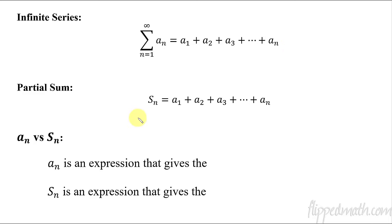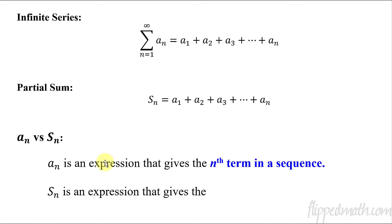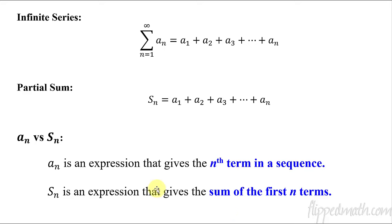A partial sum is where you take the sum of the first n terms. So if I said the first five terms, S(5), that partial sum would be the first plus the second plus the third plus the fourth plus the fifth. That's what S(5) would be — adding up the first five terms. So the difference between them: a(n) is an expression that gives the nth term in a sequence, while S(n) is an expression that gives the sum of the first n terms of the sequence.